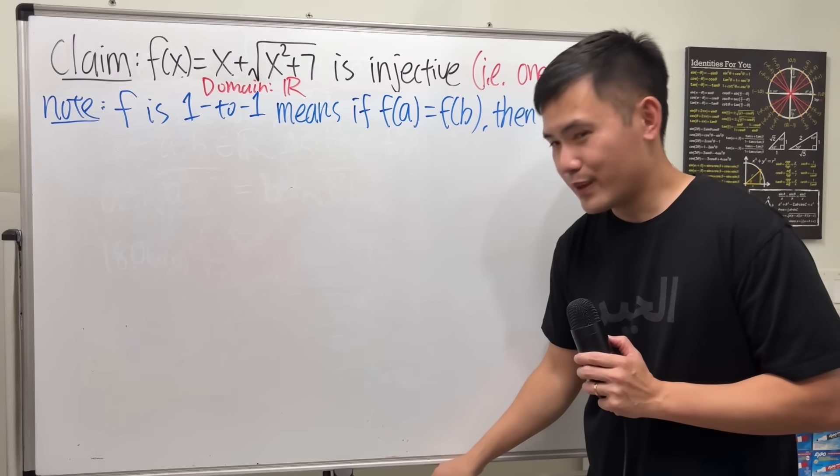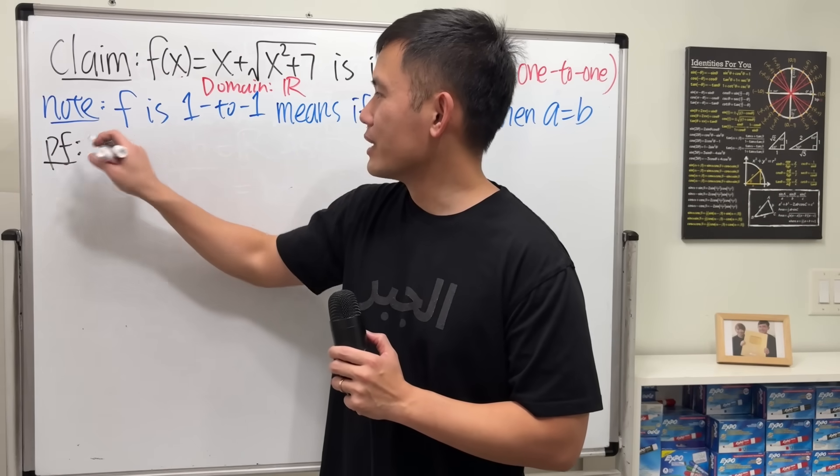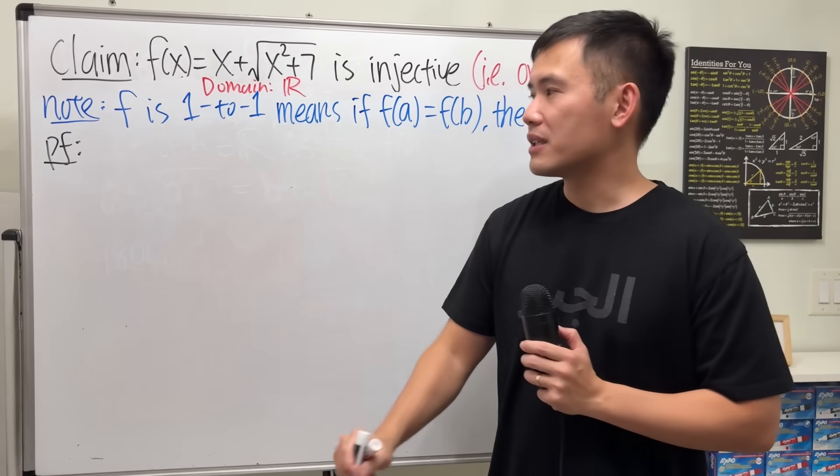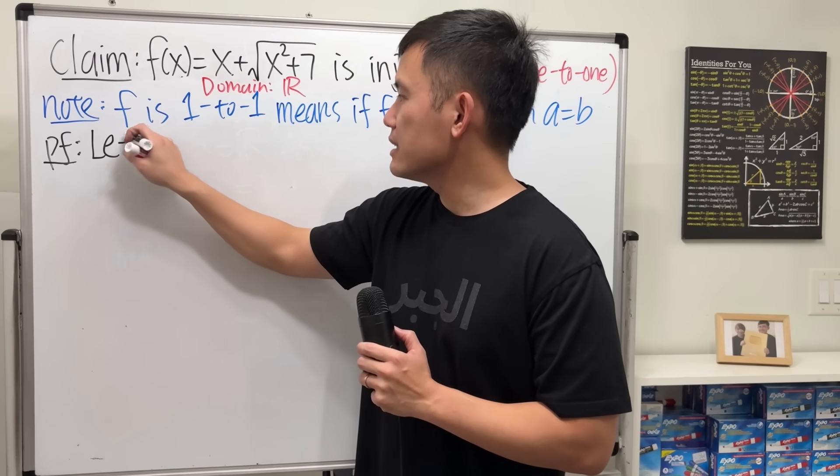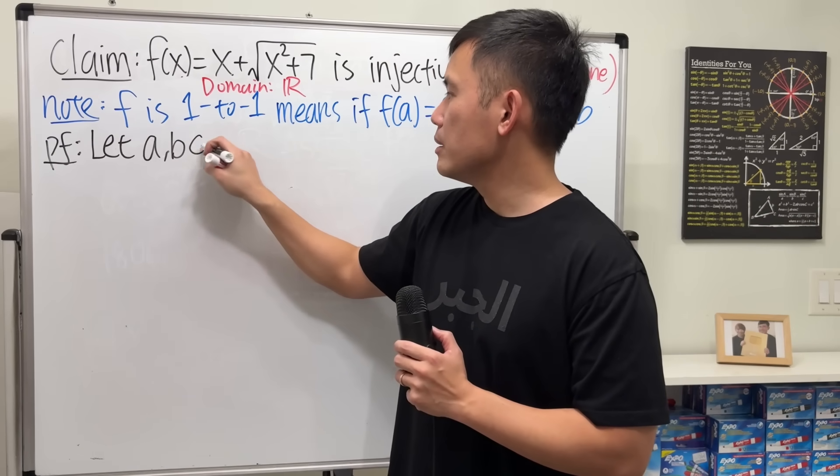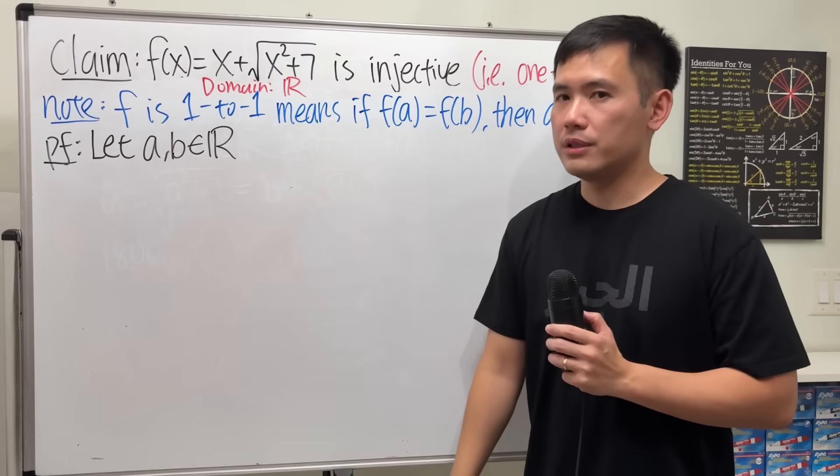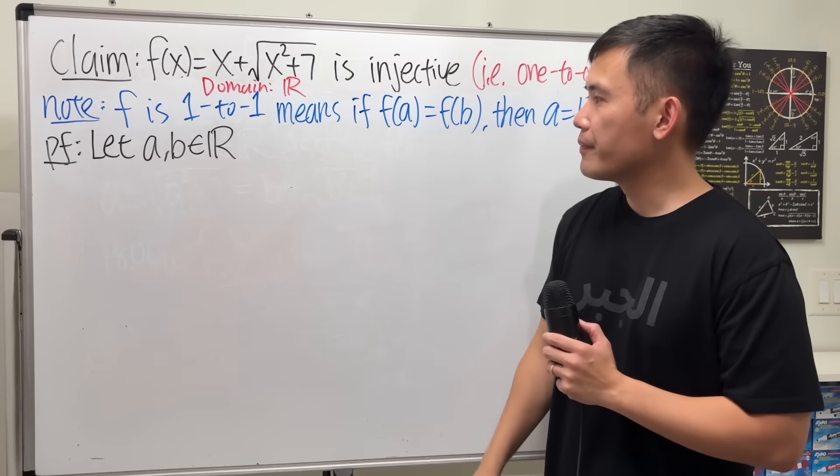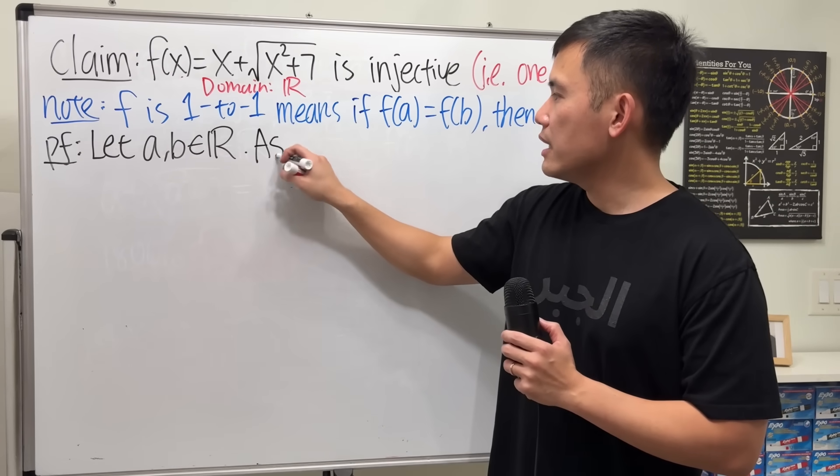All right, here we go. Proof. To start, we are going to say, let a and b be in the domain of the function, which is just the several real numbers here. And then we are going to begin by saying, assume